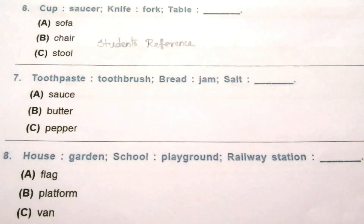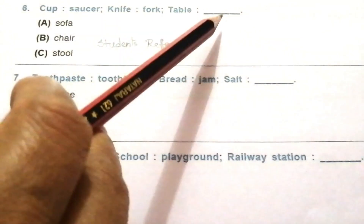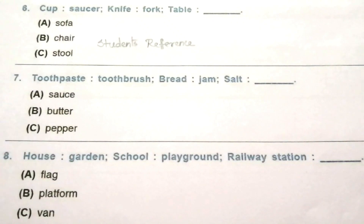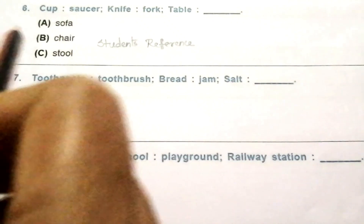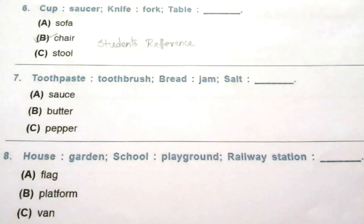Question 6: cup, saucer; knife, fork; table — desk. The options are: sofa, chair, stool. The answer is B, chair. Table — chair.